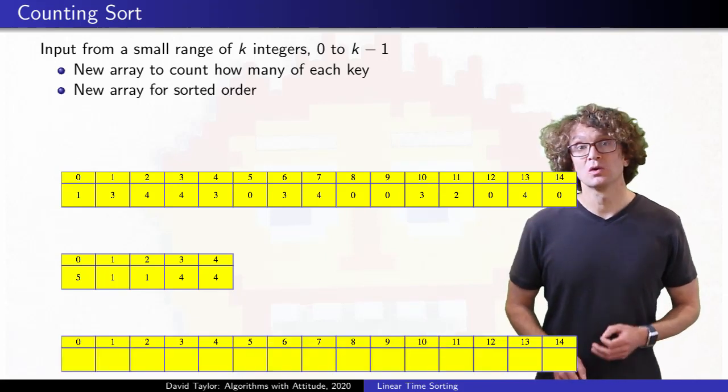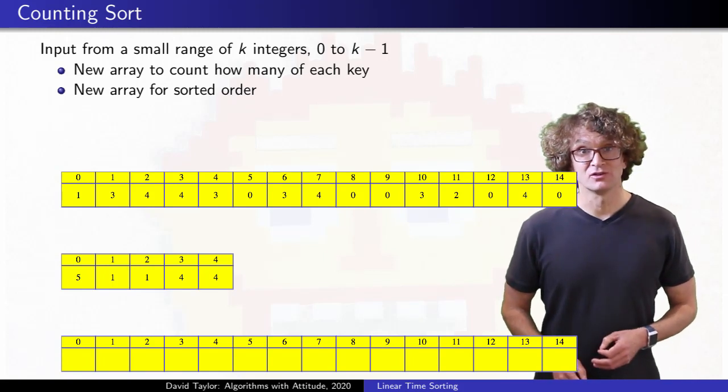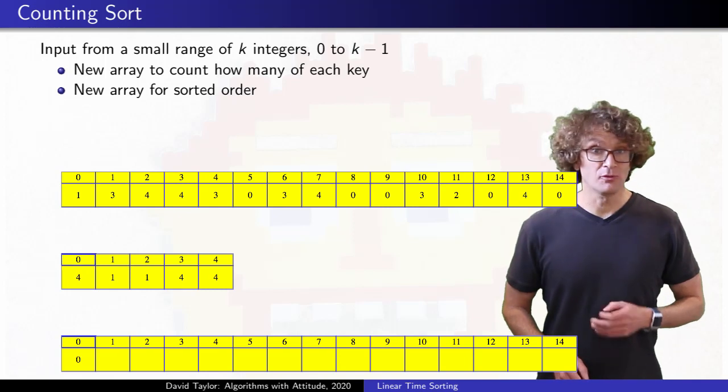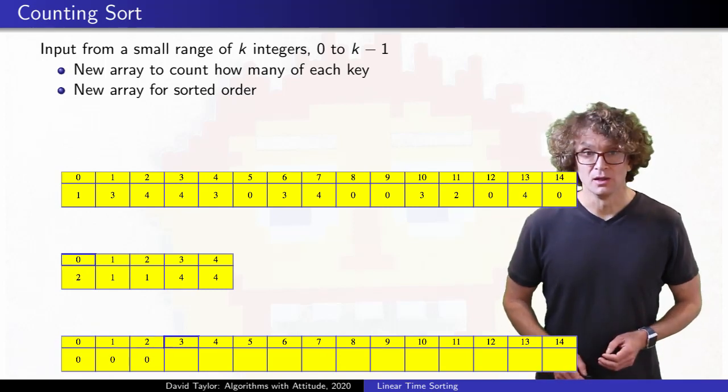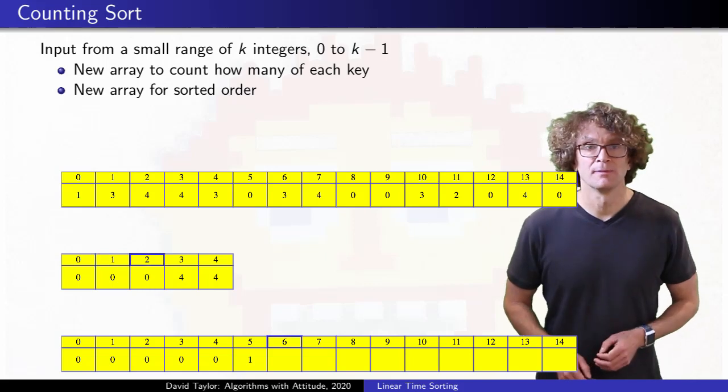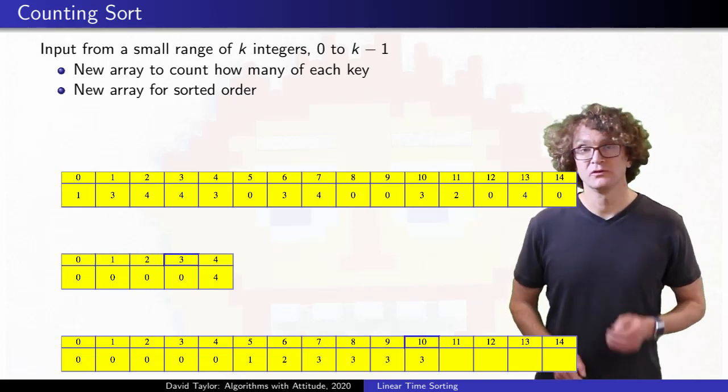It starts with 5 items of key 0, then 1 item of key 1, and so on. We'll make a new array for our sorted list. Now, if you just wanted a list of keys in sorted order, you could use the counter information to fill that array, loop through those counters, and write out that many of each key. So you could write 5 0s, then 1 1, 1 2, 4 3s, until you are done.